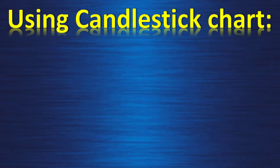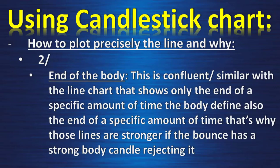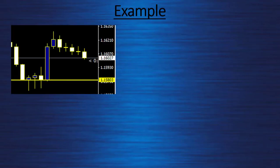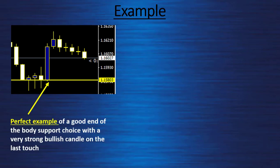Using the candlestick chart, our second way: the end of the body. This is confluent with the line chart that shows only the close of a specific period of time. The body also defines the end of a specific amount of time for a candlestick. These lines are stronger if the bounce has a strong body candle rejecting it. A clear example: we have two bounces ending at the body, with a strong big candle rejecting it — a perfect example of a good end-of-body support with a very strong bullish candle on the last touch, which is the most important and most significant for future price action.